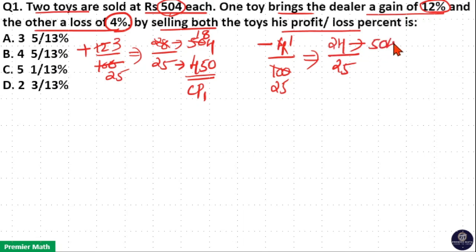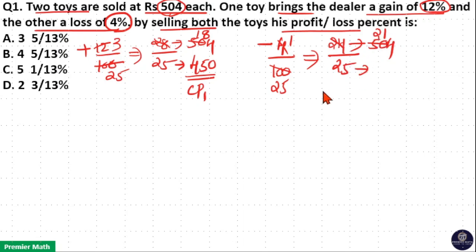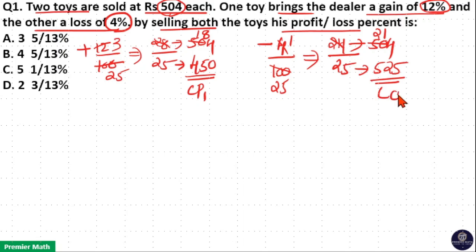The selling price is rupees 504. Dividing 504 by 24: 24 goes 2 times in 50 with remainder 2, then 24 goes once into 24, so one part equals 21. Therefore 25 parts is 25 into 21: 25 into 20 is 500, 25 into 1 is 25, giving 525. So CP2 = ₹525.